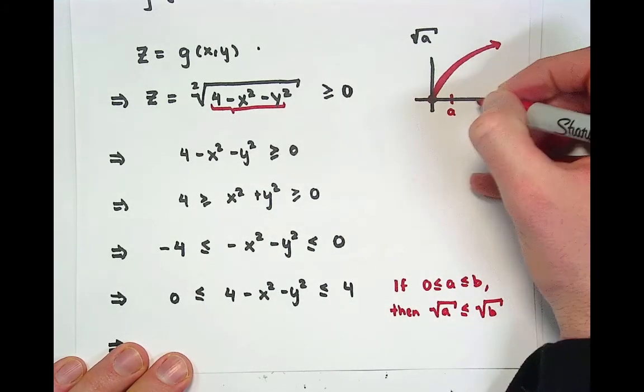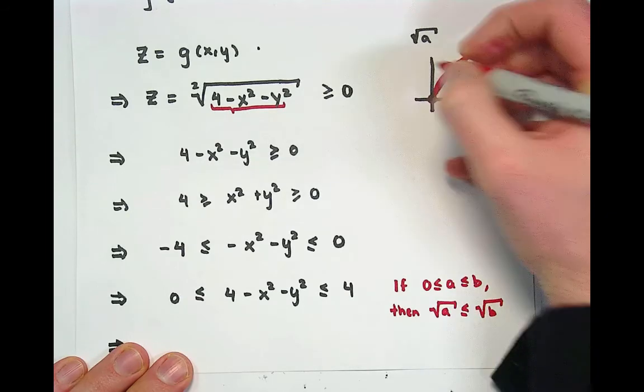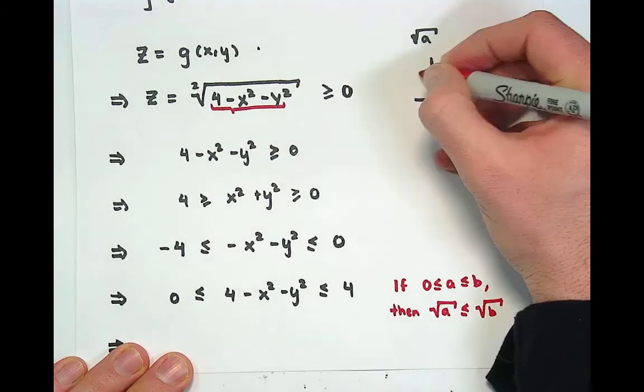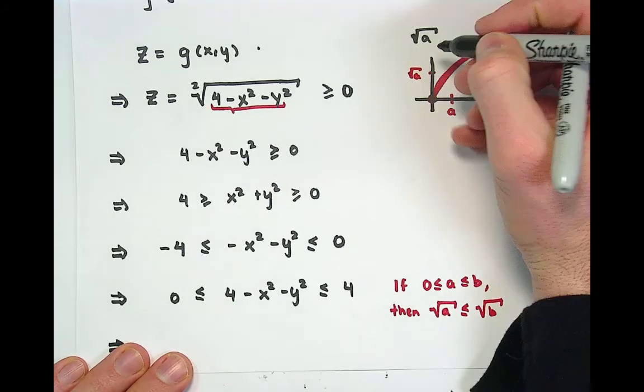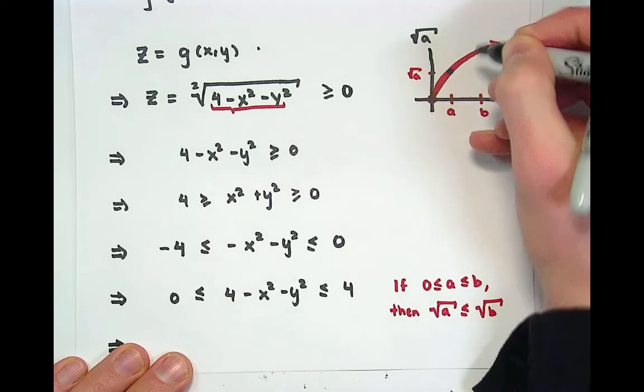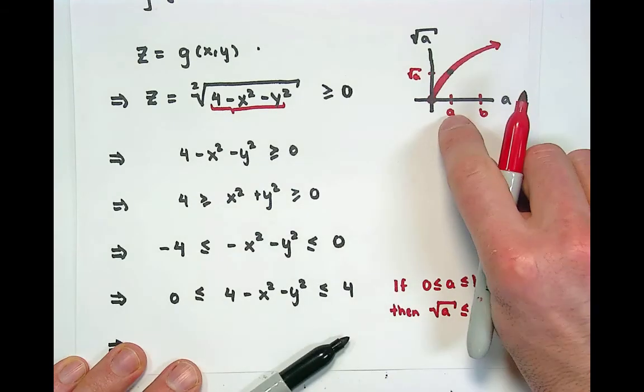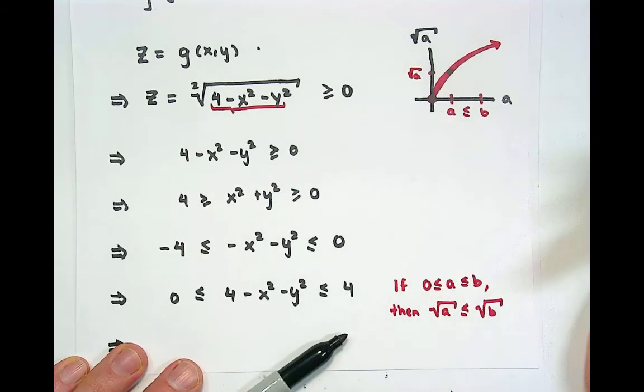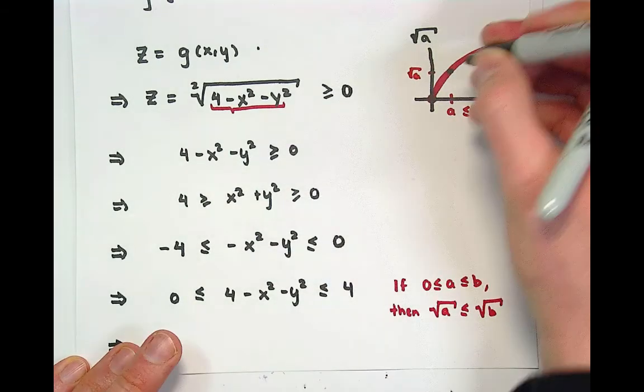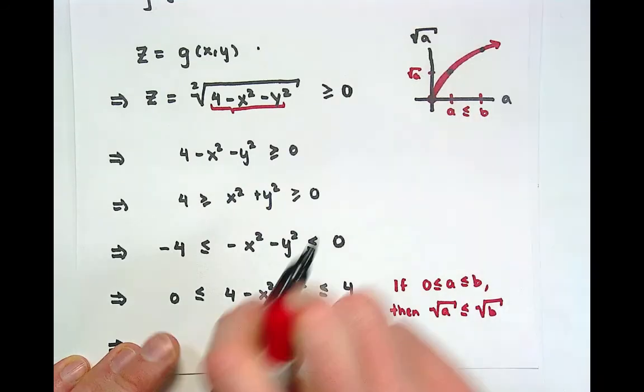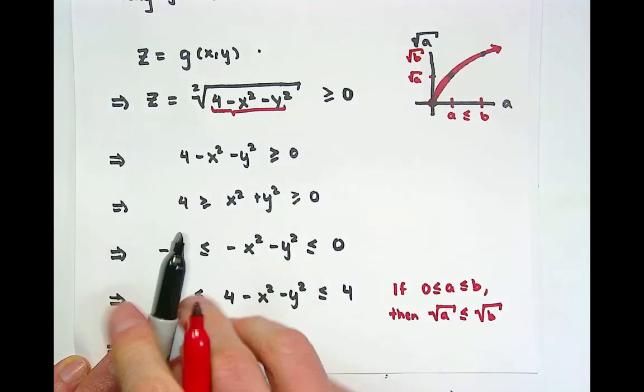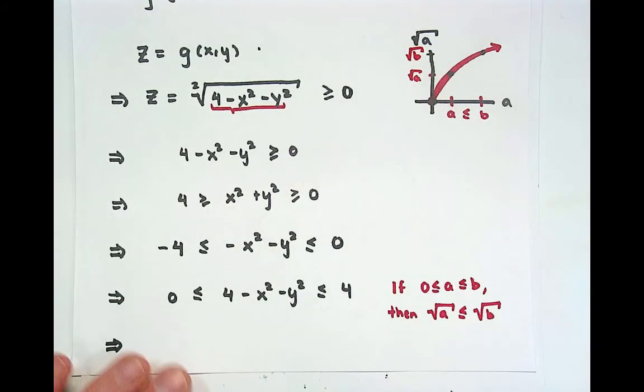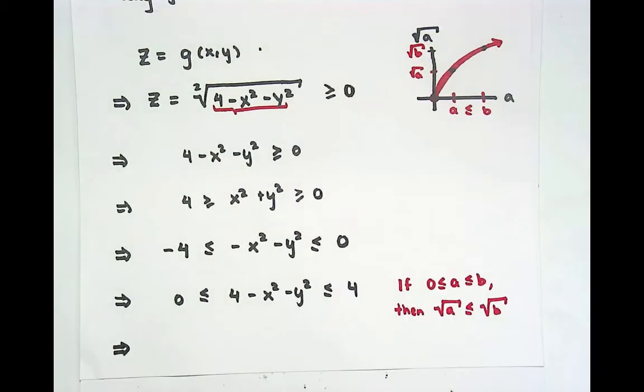Perhaps you have some point a and some point b. If you looked at the square root of a, I should have used a different variable here because I'm using a as both a dummy and a specific. But the point is this dot, if your inequalities like this, would be lower than the dot having to do with the larger number. That's because the square root is the inverse operation of a parabola, and on the particular domain of the parabola, this thing happens to be monotonically increasing.